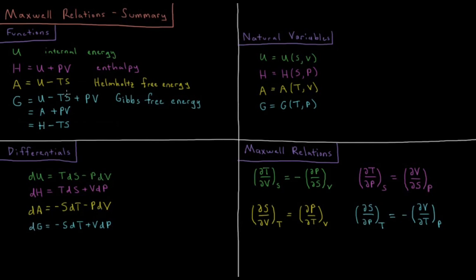And the Gibbs energy is a transformation of both those variables, so dG equals minus SdT plus VdP.